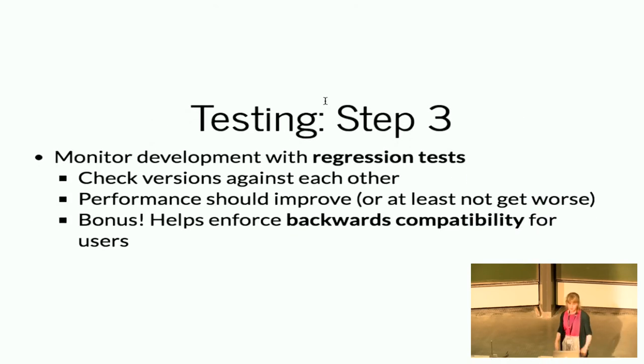Okay, and then the third step is you need to monitor the development of your code with regression tests. So if you're continuously developing a code, you need to make sure that it's actually improving in performance, or at least not getting worse. So this can actually catch some really subtle bugs. So maybe if you change your code a bit and it kind of makes an error, it doesn't cause it to break, but just causes everything to kind of shift a bit and be a bit less good, then it can catch those sorts of errors. It's also really good if you have other people using your code, because it can help enforce backwards compatibility. So for example, if you change a function so it now has three arguments rather than two arguments, then this will catch that. And it means that if lots of people are using your code, suddenly everything won't break for them. So that's quite good.